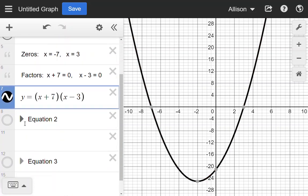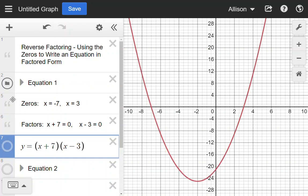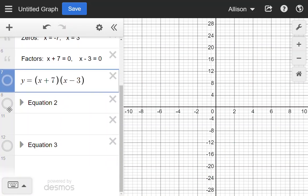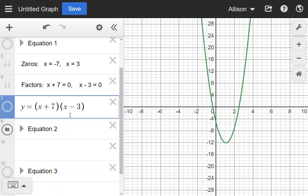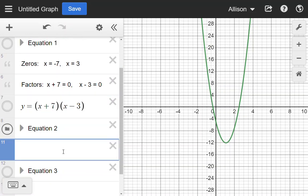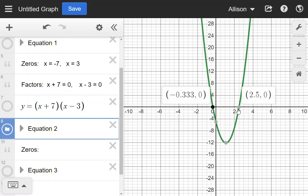Taking a look at the next example, I'm going to turn off equation 1 and look at equation 2. This is another one that I want to solve by reverse factoring. So I'm going to look for the zeros. And if I click on those, they are at -0.333 and 2.5.